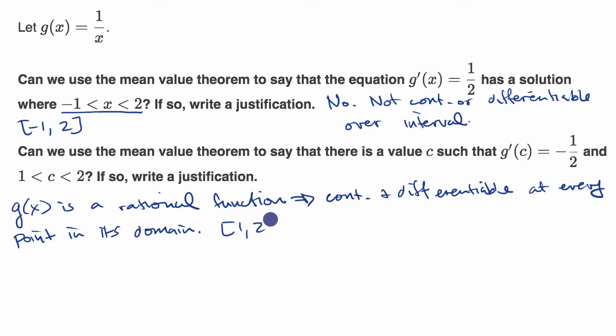The closed interval from one to two is in the domain. Now let's see what the average rate of change is from one to two. We get g of two minus g of one over two minus one equals one half minus one over one, which equals negative one half.